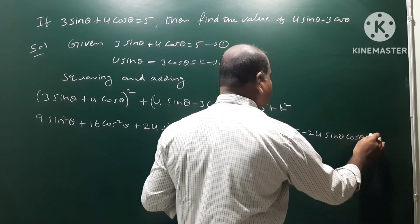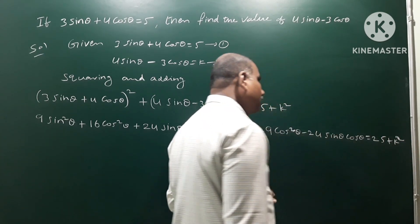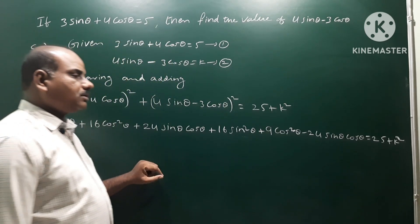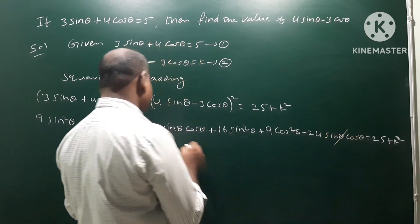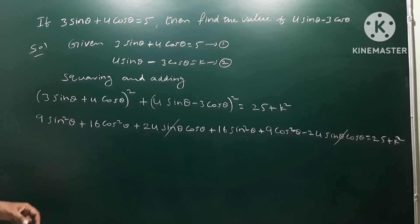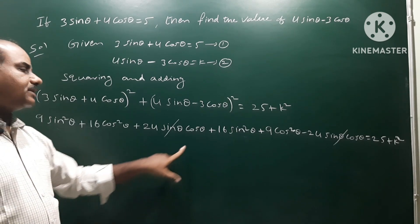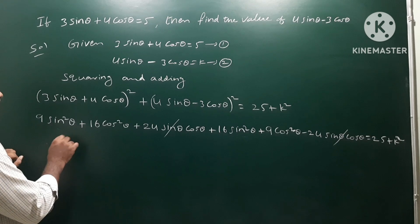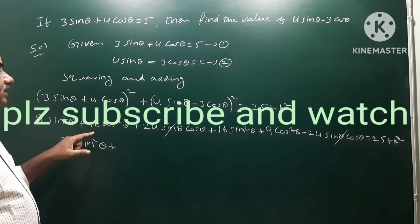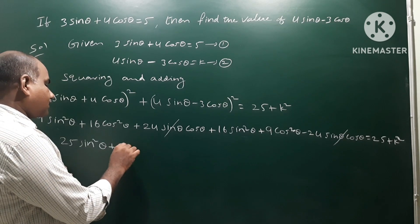Right side is 25 + k². Now, +24sinθ cosθ and −24sinθ cosθ cancel each other. Collecting sin²θ terms: 9 + 16 = 25sin²θ. Collecting cos²θ terms: 16 + 9 = 25cos²θ. So left side becomes 25sin²θ + 25cos²θ.